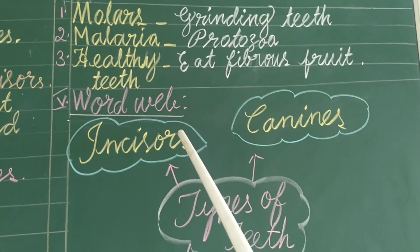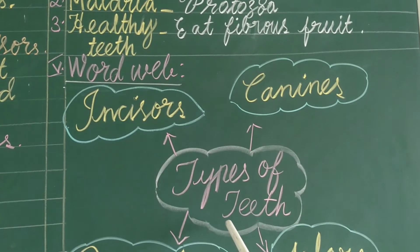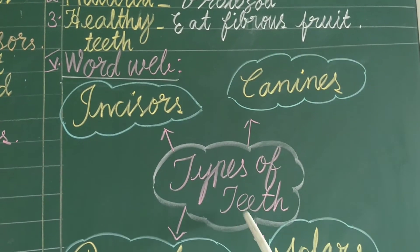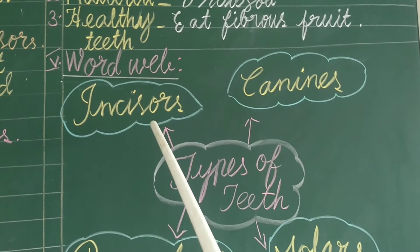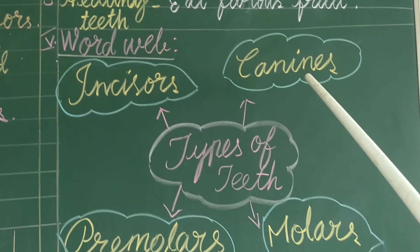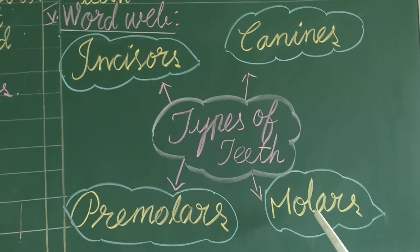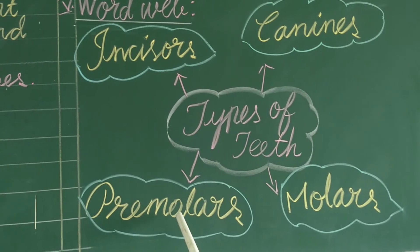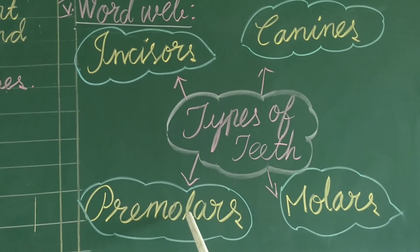Fifth Roman, word verb: type of teeth. Incisores, canines, molars and premolars.